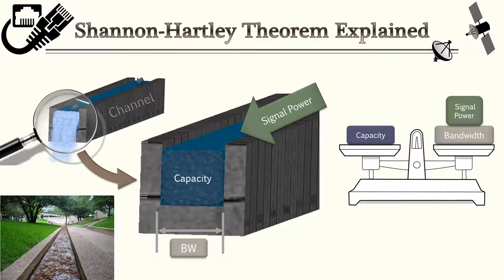The wider your channel — or wider your bandwidth — the more capacity you have for your water. There's also another factor: your signal power. Signal power represents the flow, or how powerful your water stream is going down the channel. If you increase your signal power, you can get more water through. Similarly, if you increase your bandwidth, you get more water flow. To increase capacity, you can increase one or the other.